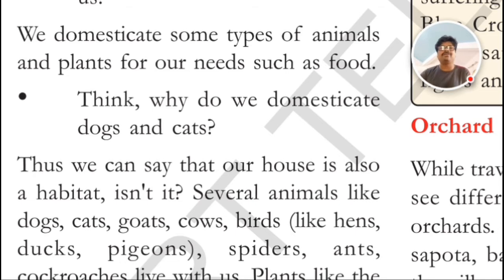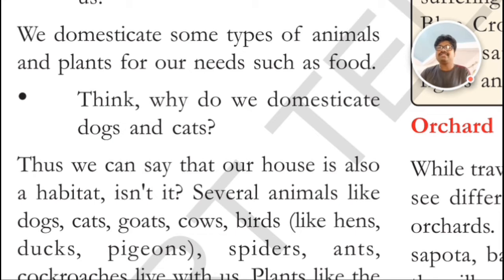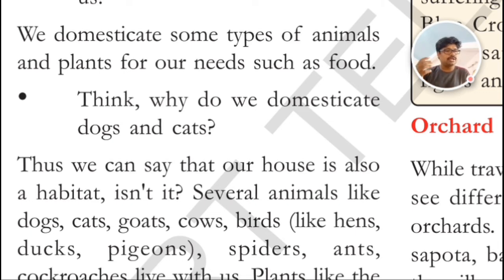Hens — very good! Sheep, goats. And we also grow some fish, but aquarium fish are not used as food because they are only for the beauty of our house. Can you also name some plants we domesticate? Vegetables — like brinjal, lady's finger, tomatoes, and beans, etc. We grow them in our house. These plants are domesticated; we call them domestic plants.